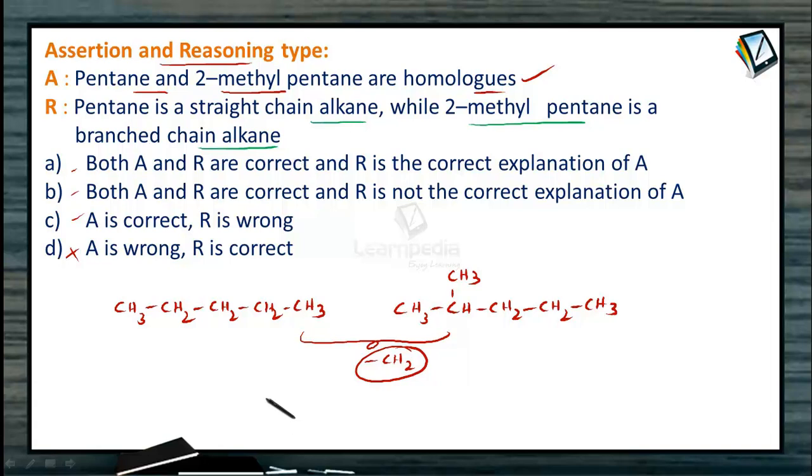Yes, that is the correct statement. Because n-pentane is a normal pentane where all the carbon atoms are linked with each other to form a long chain, and in 2-methylpentane, there is a branch at the second position. So this statement is also correct.